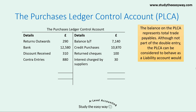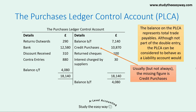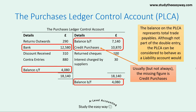Once all of the items have been recorded in the control account, it is balanced in exactly the same way as any other T account. In incomplete records questions, usually but not always, the missing figure you need to calculate is credit purchases. Exam questions typically only include the balance at the start and end of the year, the credit purchases figure as the missing figure, and the bank figure representing the amount paid to suppliers. However, these other items can appear in an incomplete records question, so do look out for them.